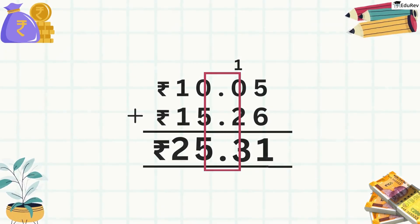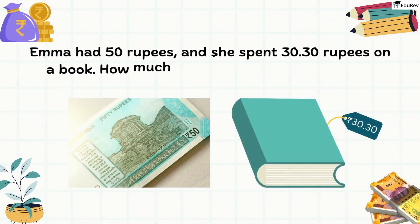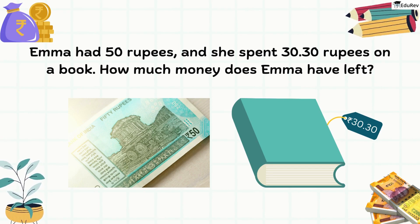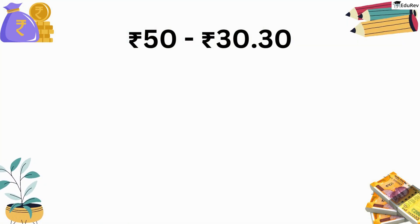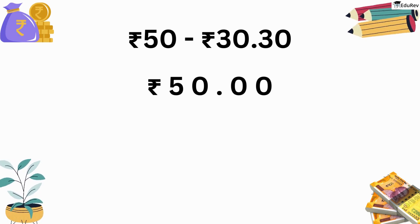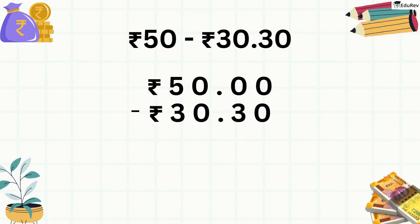Just like we added money, we will now learn its subtraction. Emma has 50 rupees and she spent 30.30 rupees on a book. How much money does Emma have left? To solve this problem, we need to subtract the amount spent from the total amount Emma had. 50 rupees can be written as 50.00 as there are no values given after the point. So we write 50.00 rupees minus 30.30 rupees.